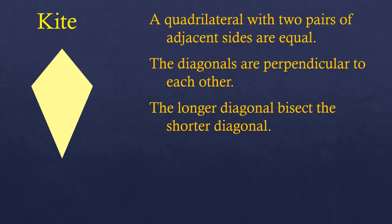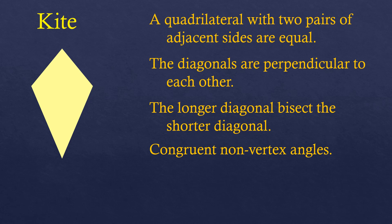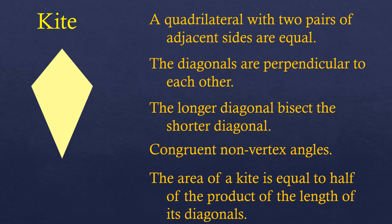Unlike the parallelogram where diagonals bisect each other, in a kite only the longer diagonal cuts the shorter diagonal into half. Also, the kite has congruent non-vertex angles, meaning the angles at the left and right are equal. Additionally, the area of a kite equals half the product of the lengths of its diagonals — you just need to know the diagonal lengths, multiply them, and take half to get the area.